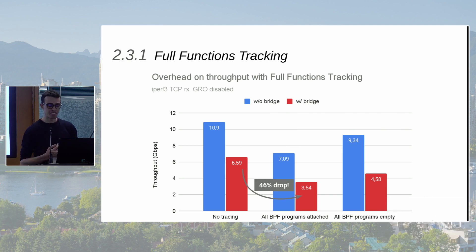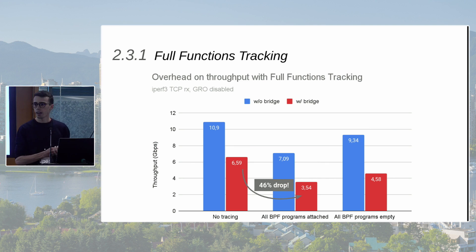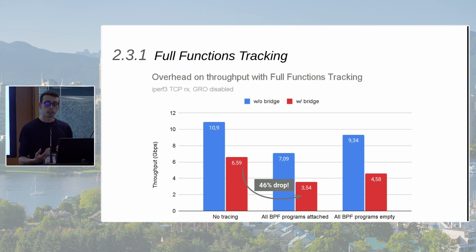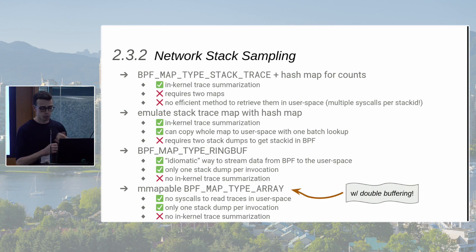Interestingly, if you leave all eBPF probes attached at their attachment points but empty them so they perform no instructions, the overhead is still significant. The reason is that there's an inherent cost to eBPF instrumentation itself — I'm tracing functions run very frequently, most of them running for every incoming packet, which at these speeds with GRO disabled is in the millions of times per second. So the eBPF instrumentation overhead is amplified accordingly.